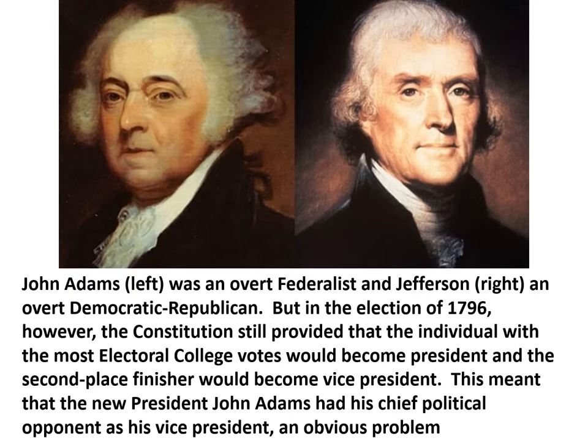But in the election of 1796, the Constitution still provided that the individual with the most electoral college votes would become president, and the second-place electoral college finisher would become vice president. The Constitution didn't anticipate political parties. This meant that the new president, John Adams, had his chief opponent, Thomas Jefferson, as his vice president — obviously a problem.